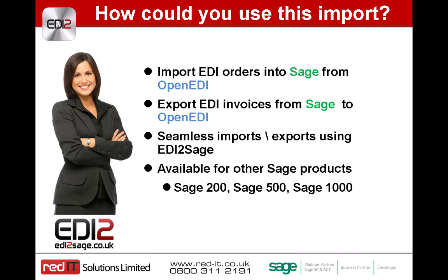So how would you use this import? You'd use it to import EDI orders from Open EDI into Sage. But having processed that, you can then export the invoices back in EDI format into Open EDI for it to be sent on to your EDI customers. It's seamless, as you'll see in a second with the presentation, and it's available for other versions of Sage like 200, 500 and 1000.